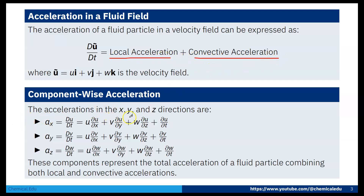The accelerations in x, y, and z directions are: ax = Du/Dt = u(∂u/∂x) + v(∂u/∂y) + w(∂u/∂z) + ∂u/∂t; ay = Dv/Dt = u(∂v/∂x) + v(∂v/∂y) + w(∂v/∂z) + ∂v/∂t; az = Dw/Dt = u(∂w/∂x) + v(∂w/∂y) + w(∂w/∂z) + ∂w/∂t. These components represent the total acceleration combining both local and convective acceleration.